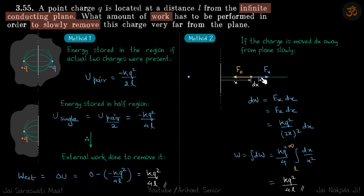The external agent is pulling it with Fx. So work done by external force is Fx dx, and magnitude Fx is equal to Fe. Fe is kQ² by (2x)², so this is small work done dW in moving it a distance dx. Total work done is integral of this, and limits of x will be from L to infinity.